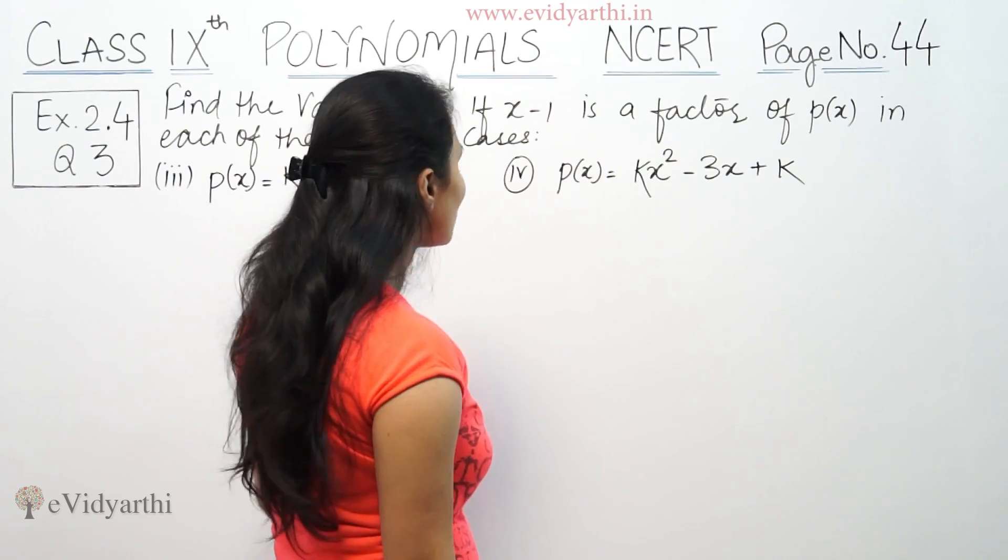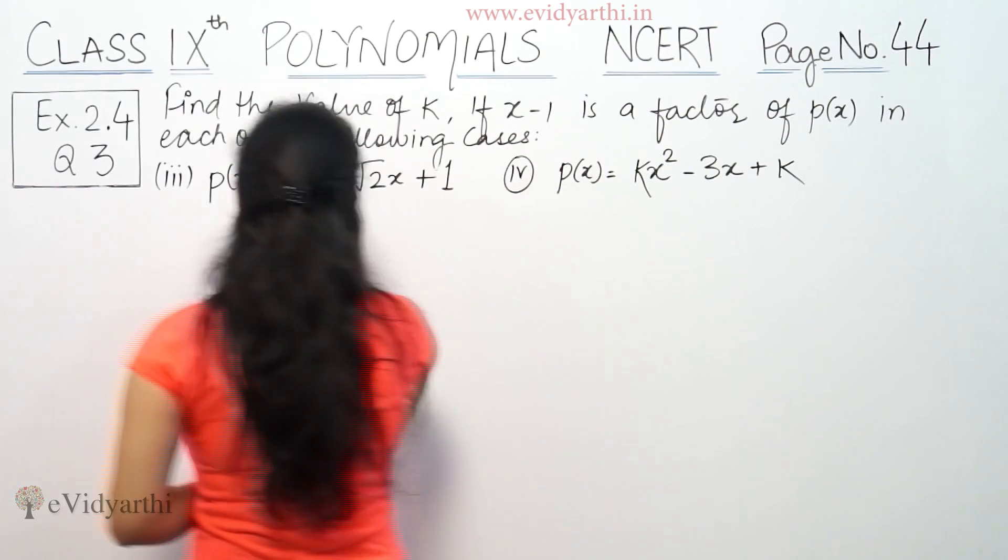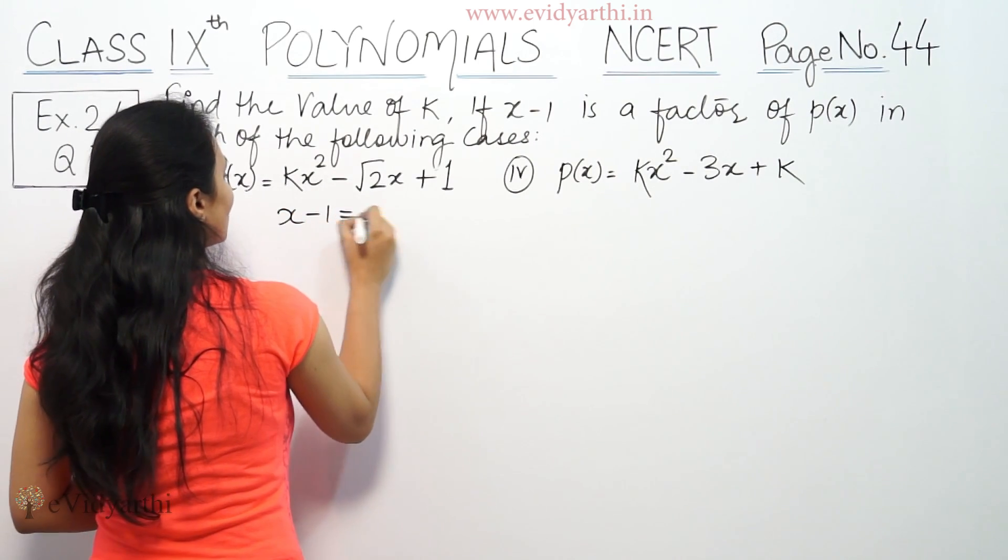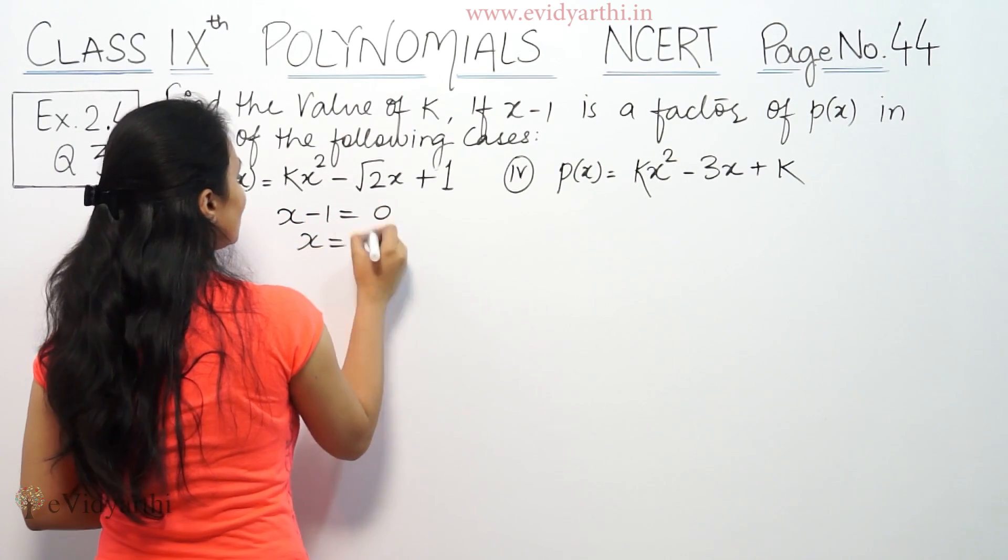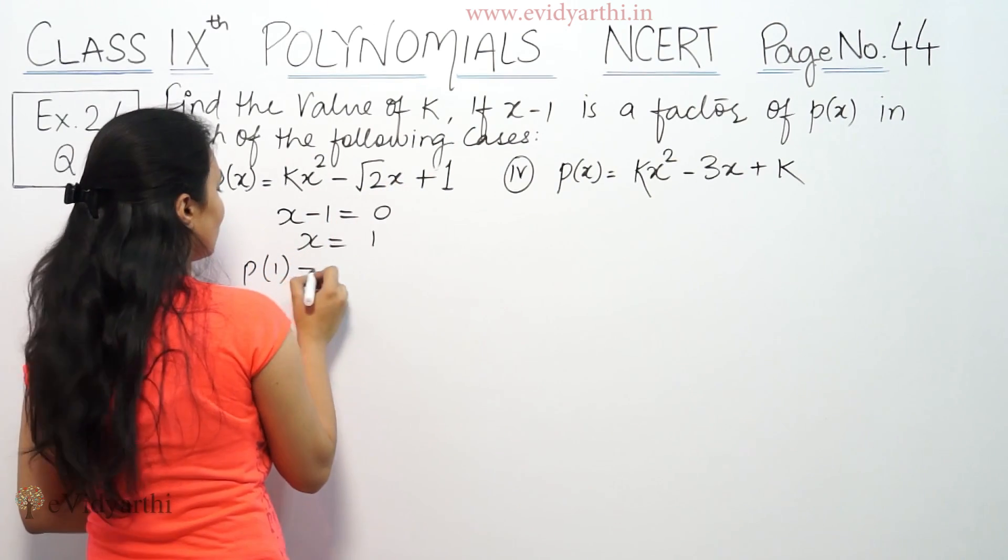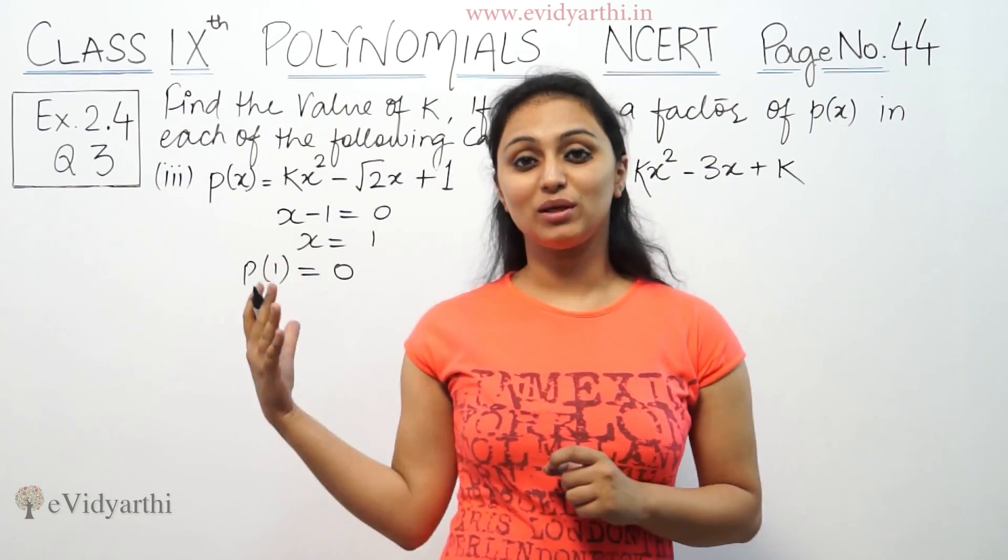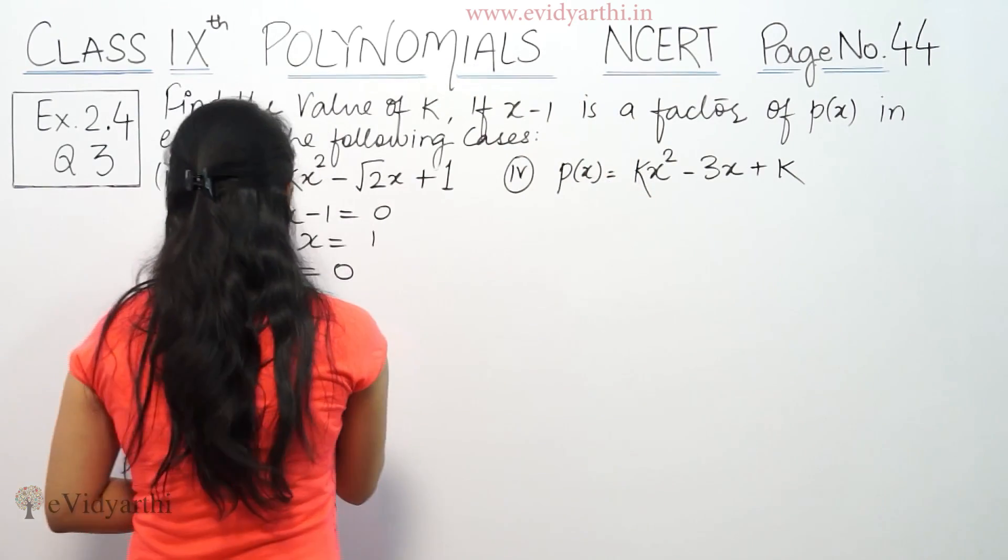x-1 is a factor means the answer should be 0. Now given that x-1 is a factor, that means if we put 1 for x in this polynomial, the answer will be 0.